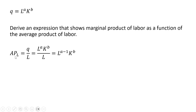Let's first solve for the average product of labor, which is just output per worker, so we're going to take the production function Q and divide it by L, the number of workers. Making the substitution in for Q in the numerator and then dividing everything through by L, we can move this L to the numerator, and so in the numerator we'll be left with L raised to the A minus 1 power, all multiplied by K raised to the power of B.